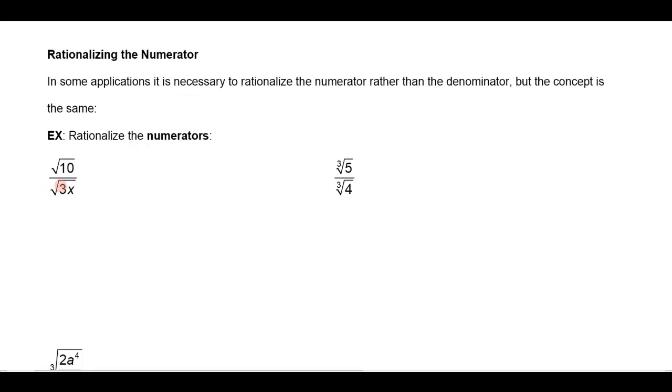So if I wanted to make the numerator a rational number, if I wanted to get rid of the square root of 10 in the numerator, I would just multiply by the square root of 10 over the square root of 10. So that would give me 10 in the numerator and I'd end up with the square root of 30x in the denominator.